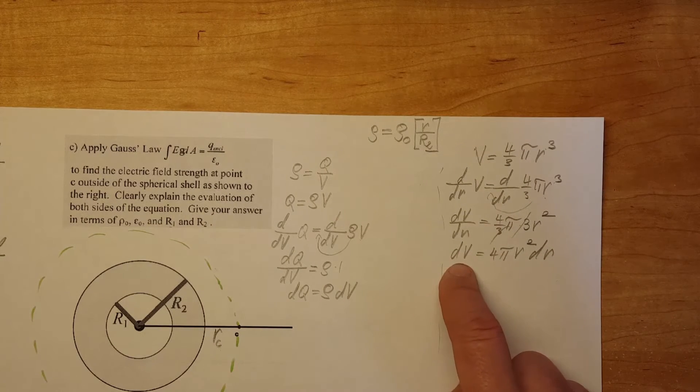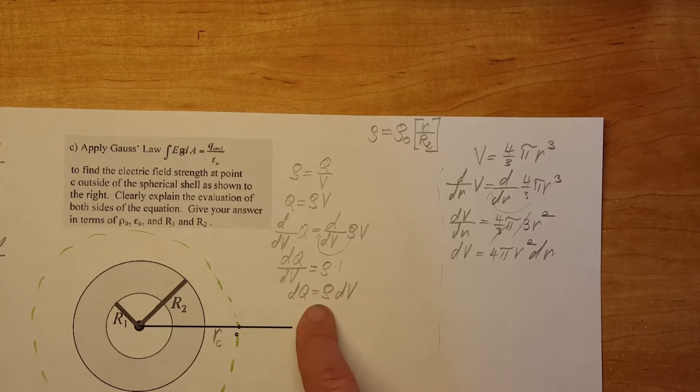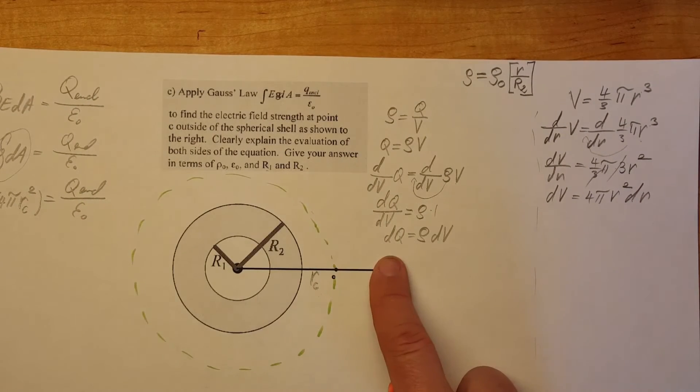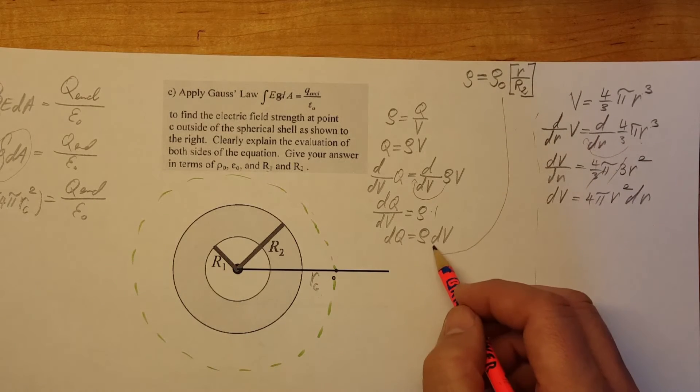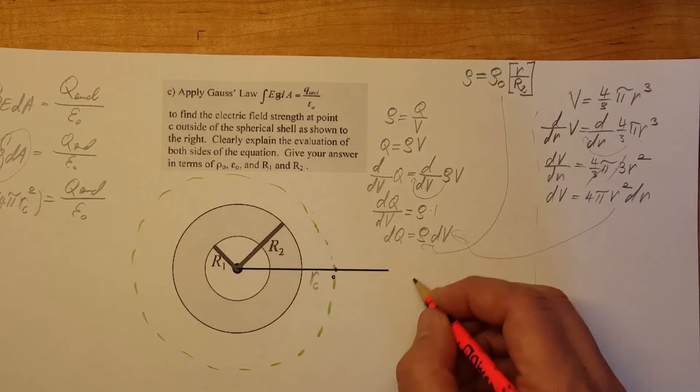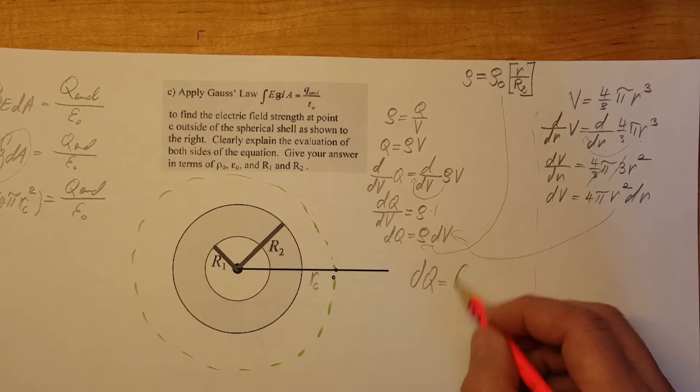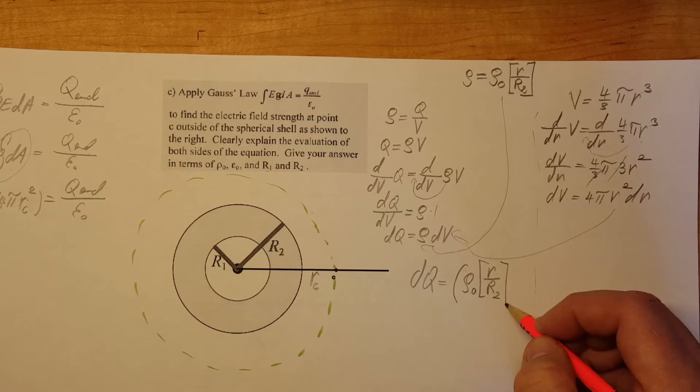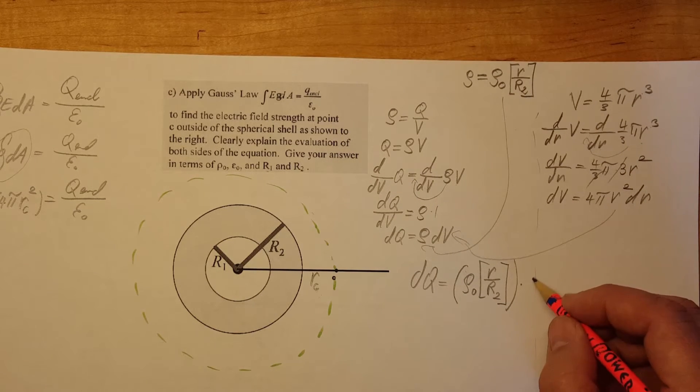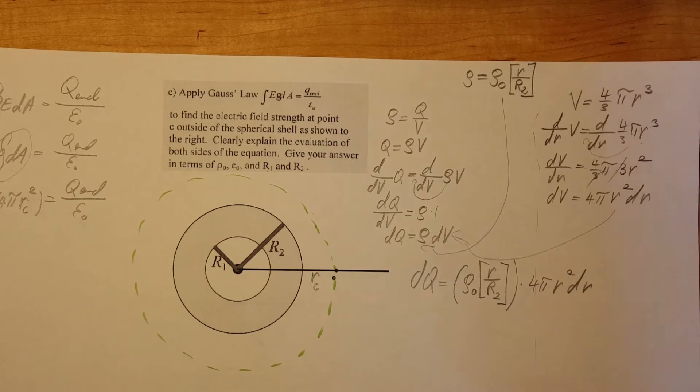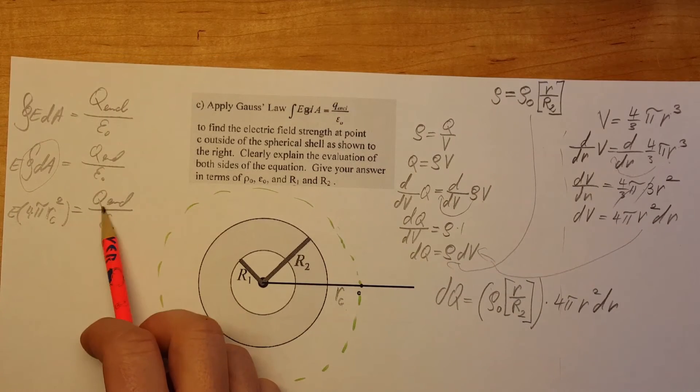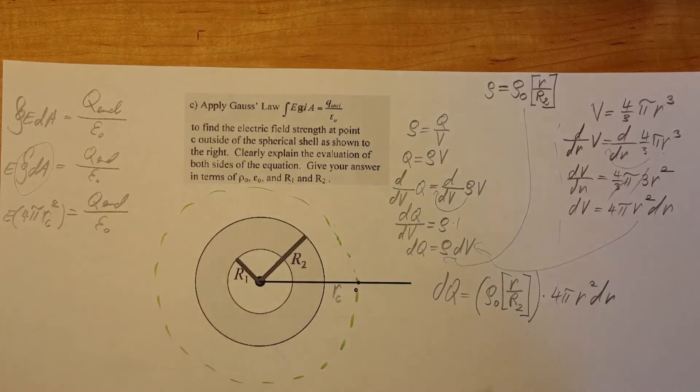Now we have a nice replacement for our dV and for our Rho we have our formula given. Now we're going to come to our dQ and plug these two in. We're going to bring this plug it in and bring this and plug it in. So dQ equals Rho 0 times R over R2 times 4 pi r squared dR. Now we're going to make this look a little bit better.